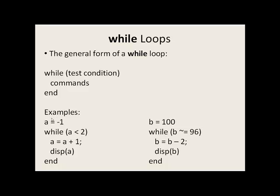Here's an example. a is equal to negative 1. We come to the test condition: negative 1 less than 2, this is true. We add 1 to a, making it 0. We display 0 to the screen, then go back up to the top. 0 less than 2, true — we add 1, making it 1, display 1. Back to the top: 1 less than 2, true — add 1, making it 2, display 2. Back to the top: 2 less than 2, this is false. So we do not execute these commands; instead, we continue on in our code.